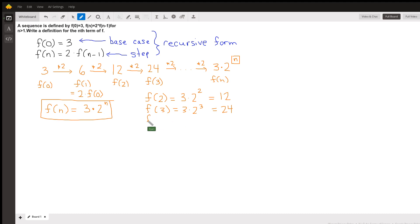And this even works for n equals 0. If n is 0, remember that the 0th power of any non-zero number is going to be 1, so we have 3 times 2 to the 0, which is 3 times 1, which is 3, our base term. So there we go, that's the explicit definition for f(n).